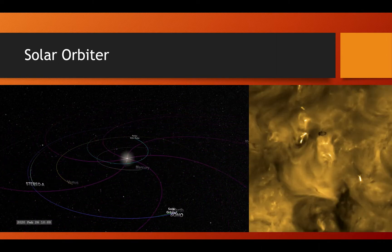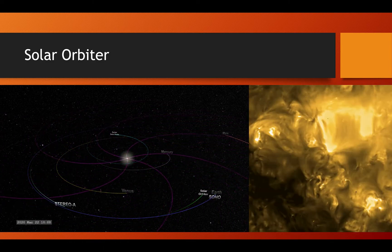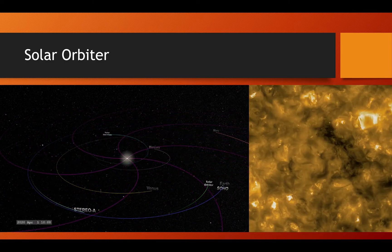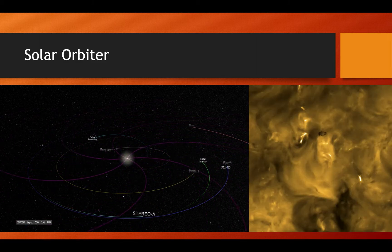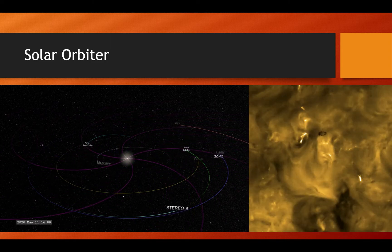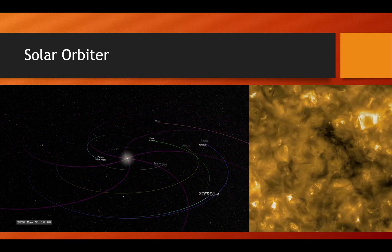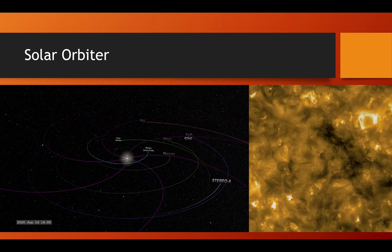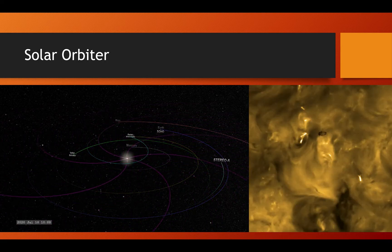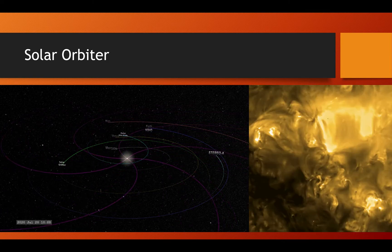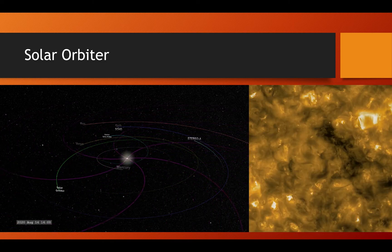Earlier this year, Solar Orbiter joined us in the constellation. She is kind of the sister mission to Parker Solar Probe. Solar Orbiter has an in-situ set of instruments that are very complementary to Solar Probe, but also a complete suite of remote sensing instruments. And so as Solar Orbiter continues in her journey, she will actually lift out of the ecliptic plane and allow us for the first time to take images of the poles of our star. And you can see those first-light images from Solar Orbiter there, just spectacular close-up images of our wonderful star.